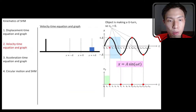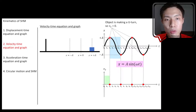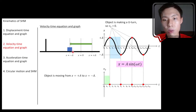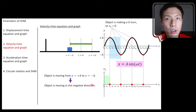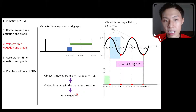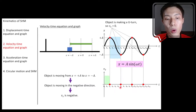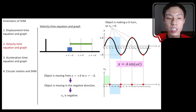Moving on to the next interval, from t2 to t6: the object moves from x = +A to x = -A, which is in the negative direction — moving to the left. If you are moving to the left, that is the negative direction, so your velocity will be in the negative direction as well. Therefore, the x-component of velocity will be a negative value, and you should plot your graph below the time axis for this interval.